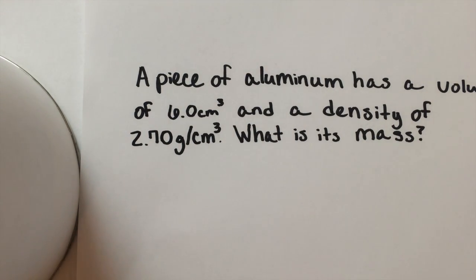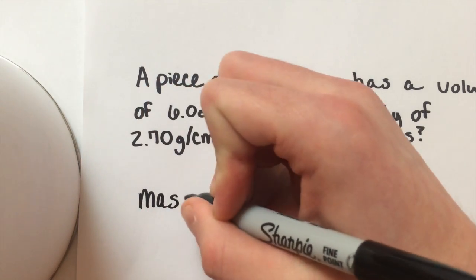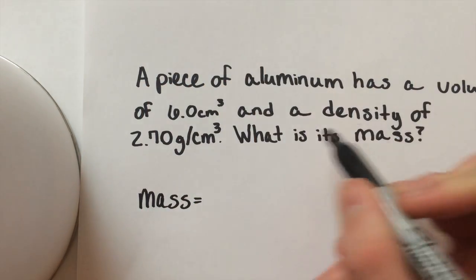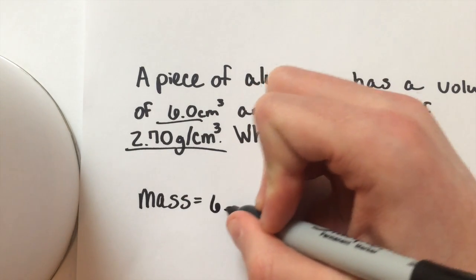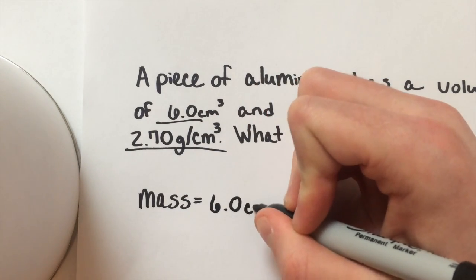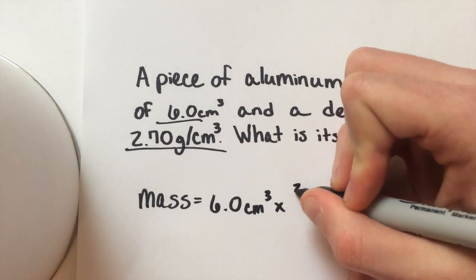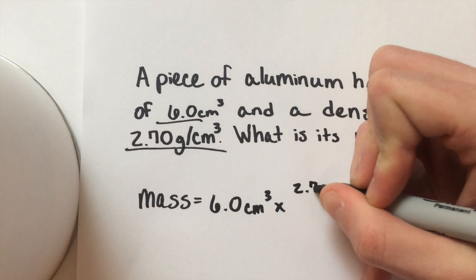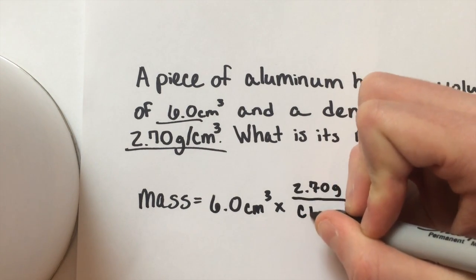Since we're looking for mass, we are left with density times volume. So let's just set it up. Mass equals these two multiplied by each other. So 6.0 centimeters cubed multiplied by 2.70 grams per cubic centimeter.